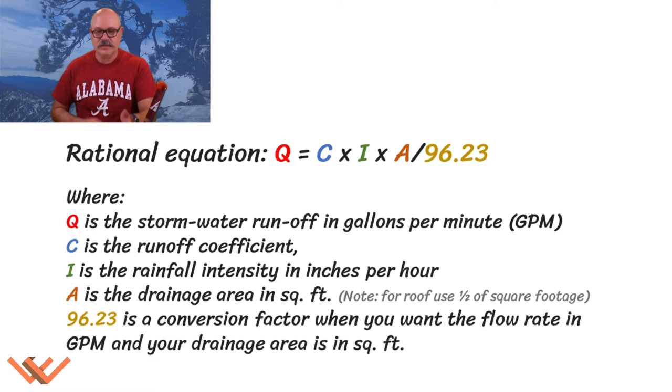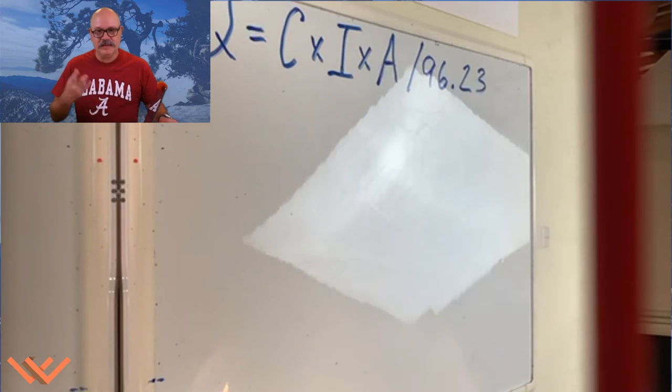Now let's get back to the problem. So I have Q, which is the storm water runoff. C is the coefficient. I is the intensity. And then A is that area. And we divide everything by 96.23. What that does is converts everything that's in square feet into gallons per minute. So let's plug in these numbers.